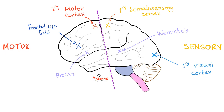When you touch something hot, how do you feel the heat? Primary somatosensory cortex. You want to contract your biceps — primary motor cortex. You're watching this video and seeing the screen — that's the primary visual cortex, a sensation. Moving your eyes is motor — that's why the frontal eye field is anterior while the primary visual cortex is posterior. Talking is Broca's area; understanding is Wernicke's area. Broca is anterior because it's motor; Wernicke is posterior because it's sensory. Medicine makes so much sense once you understand what you're talking about.